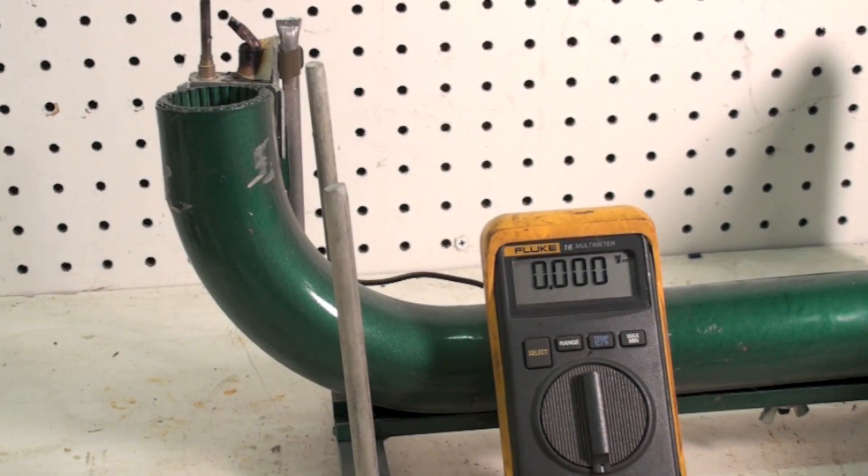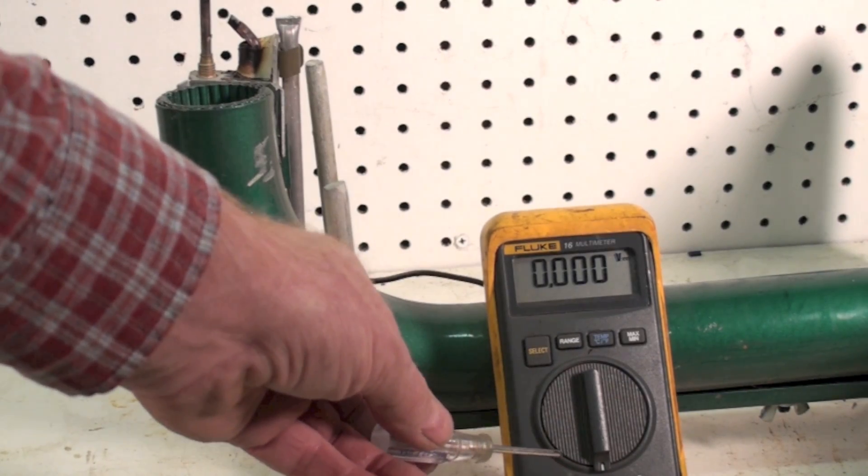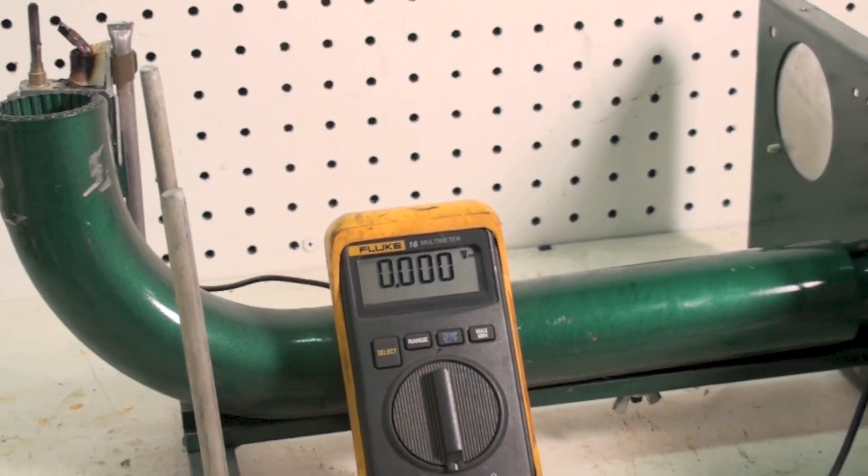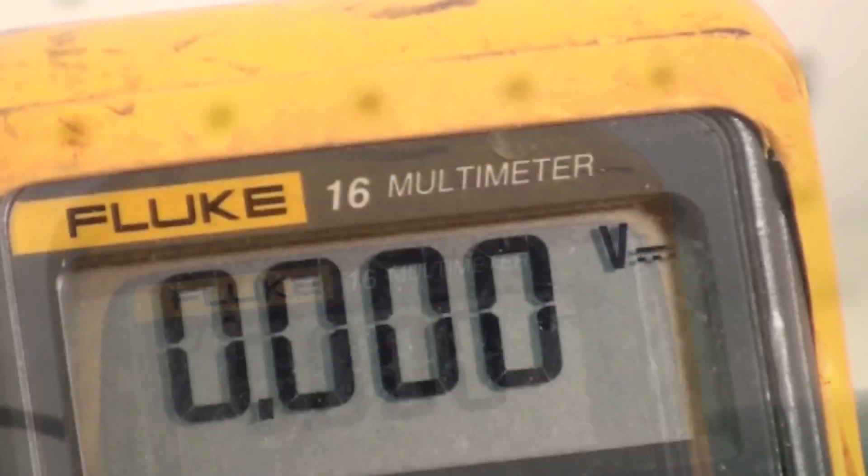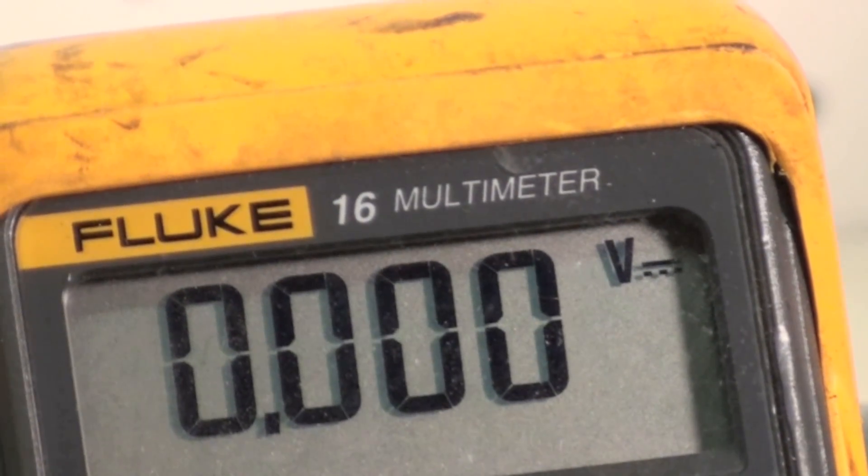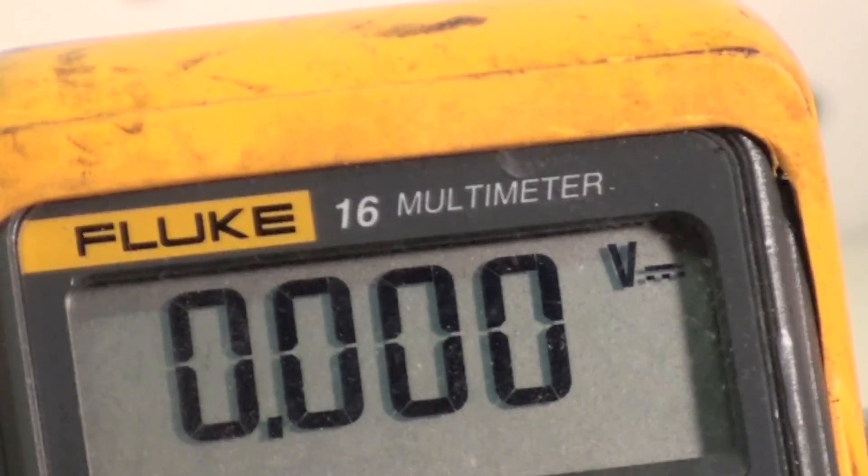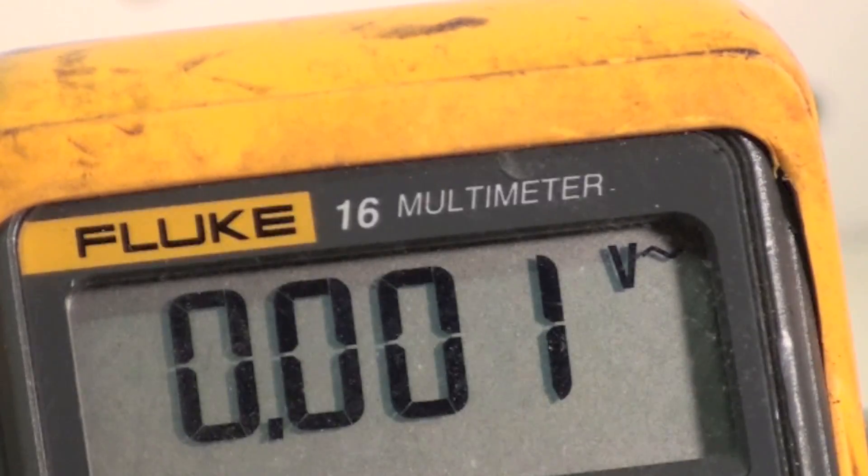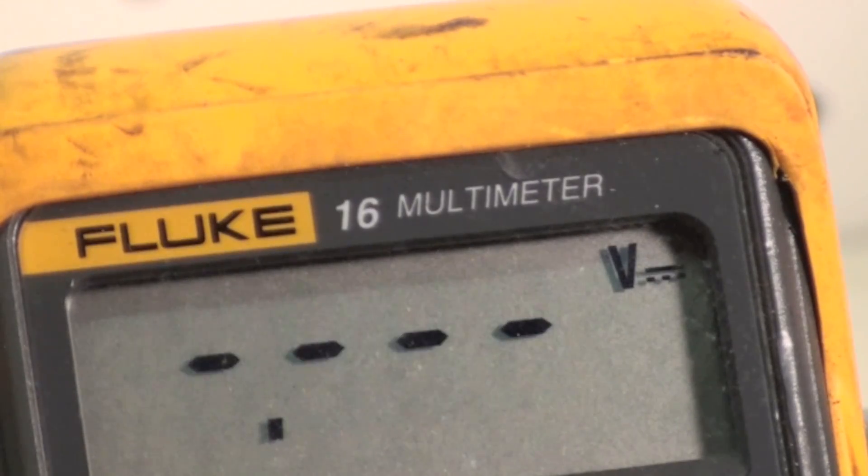In this case, this meter is set to DC volts. If you look real close in the corner, it shows you volts and then it's got the line with dots under it. That is DC volts. If it had a wavy line, that would be AC.